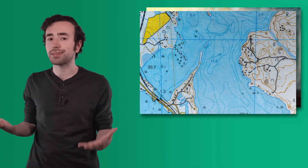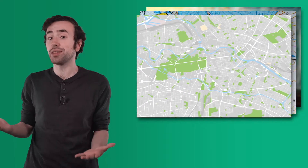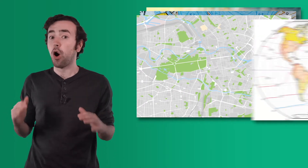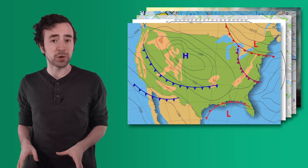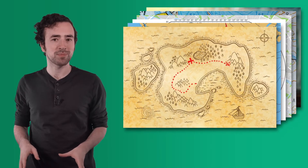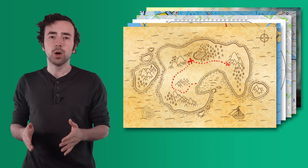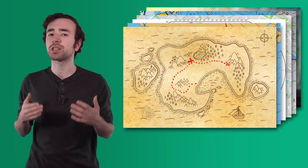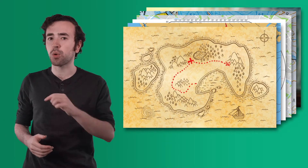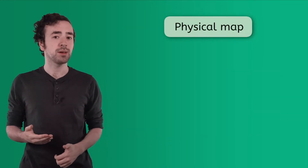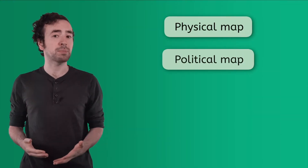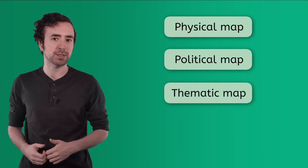Hey again. Now, there are so many types of maps, we could really talk about them all day. Maps are just as diverse as the world they show us. So today, we'll just be talking about a few of the most common and important types of maps: physical maps, political maps, and thematic maps.